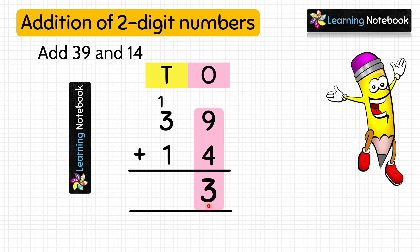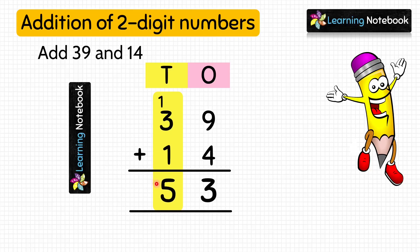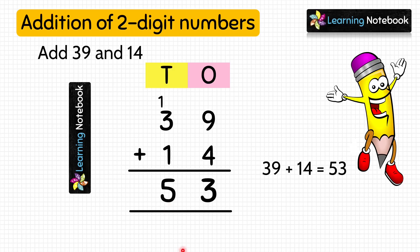Now we will add the digits at tens place. And we will make sure that we add this carry here. So 1 carry plus 3 equals 4, and 4 plus 1 equals 5. So the answer is 53. 39 plus 14 equals 53.